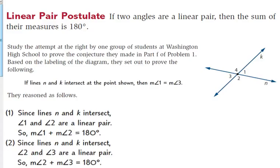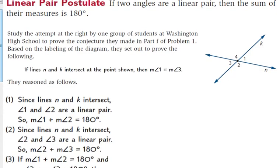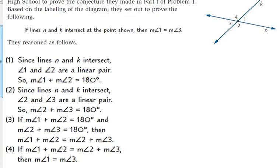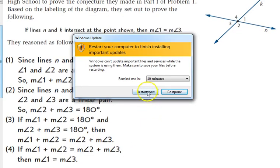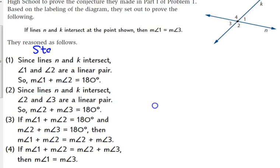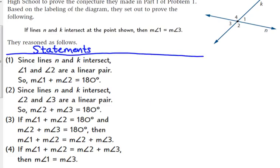We have the outline here for a proof. We just need to provide the reasons for their statements. Typically in a two-column proof, you've got statements on the left and reasons on the right.